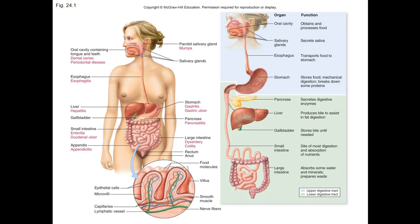The upper digestive tract is composed of the mouth, salivary glands, esophagus, and stomach. The lower digestive tract is composed of the intestines — both small and large — as well as the pancreas and liver. Referring to figure 24-1, you want to review the infections in each organ, which we're going to go through in this lecture.